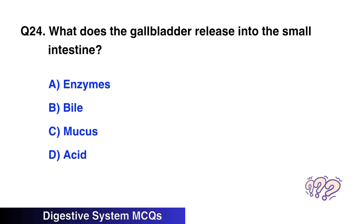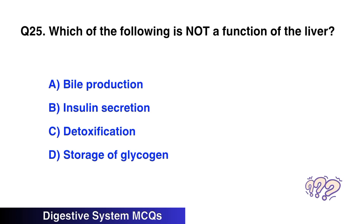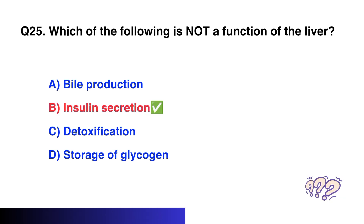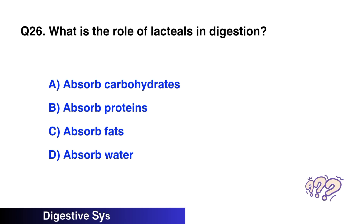Question number twenty-four: What does the gallbladder release into the small intestine? The right option is B, bile. Question number twenty-five: Which of the following is not a function of the liver? The right option is B, insulin secretion.